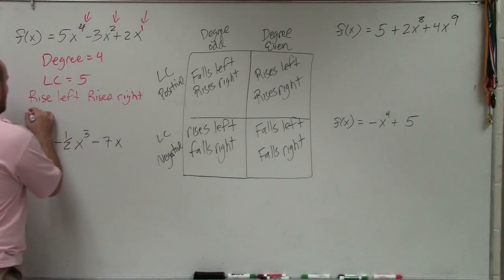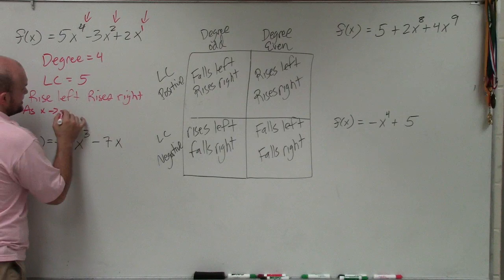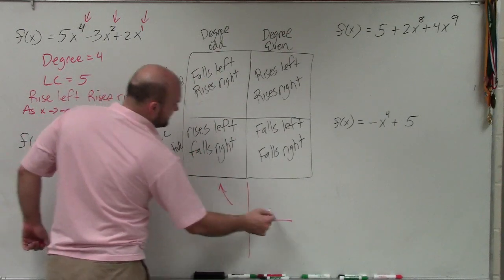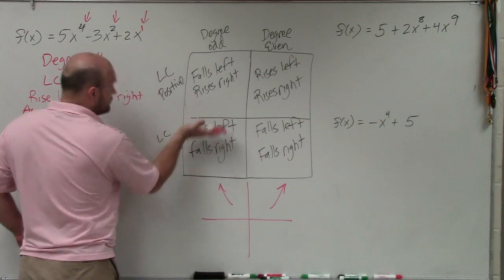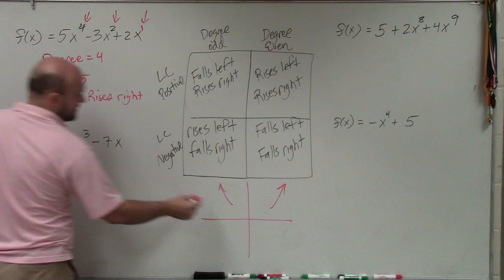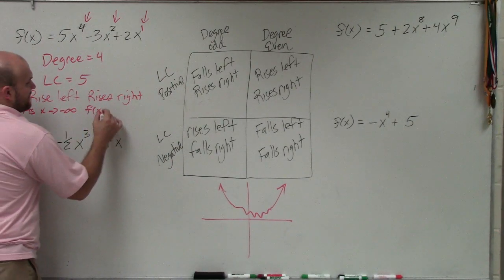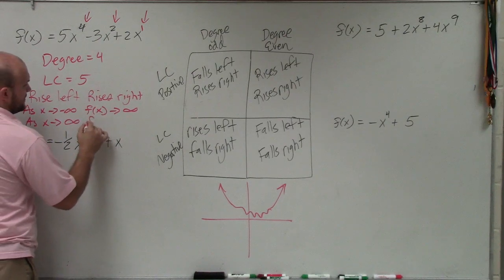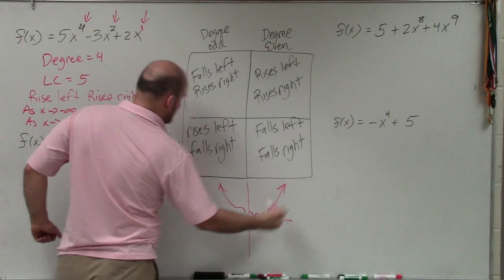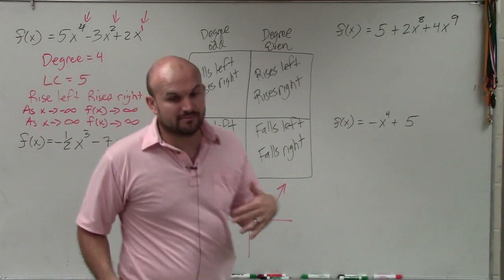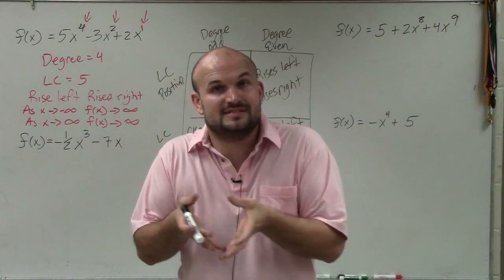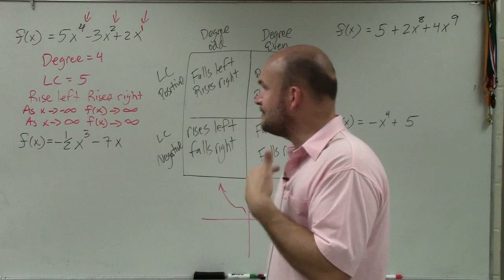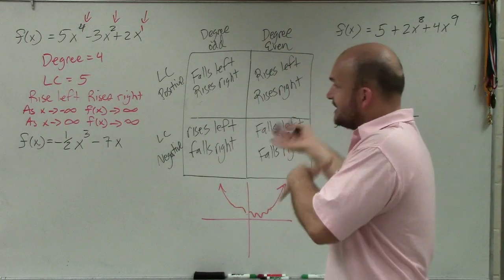Another way to write this is using interval notation. As x approaches negative infinity — meaning as I move to the left of the graph — my f of x rises up. So as x approaches negative infinity, f of x also approaches infinity. And as x approaches positive infinity, f of x approaches infinity. For pre-calculus students, interval notation is important to know; for algebra 2, identifying the end behavior as rise left, rise right is sufficient.